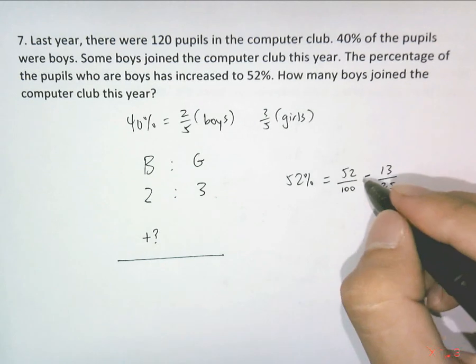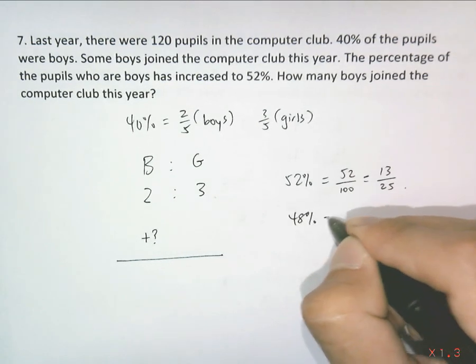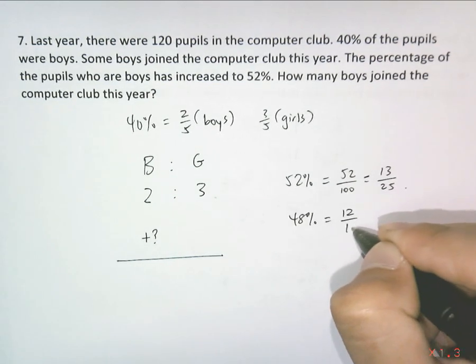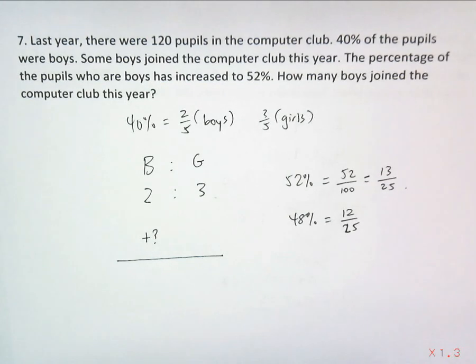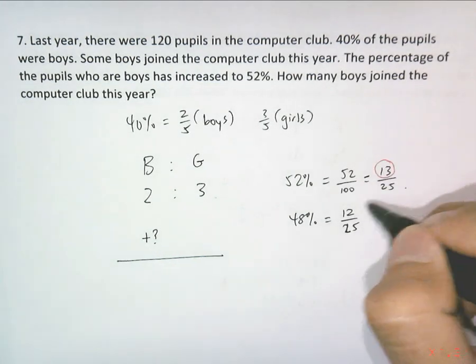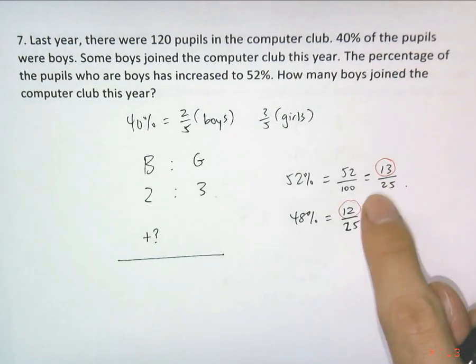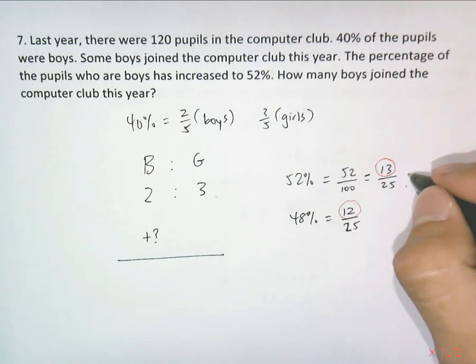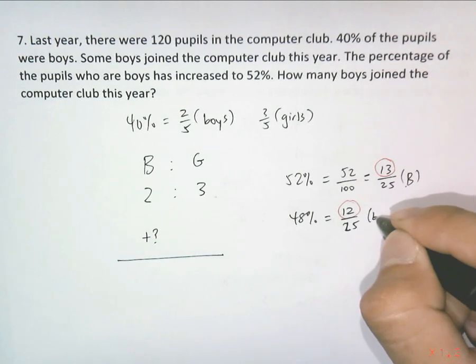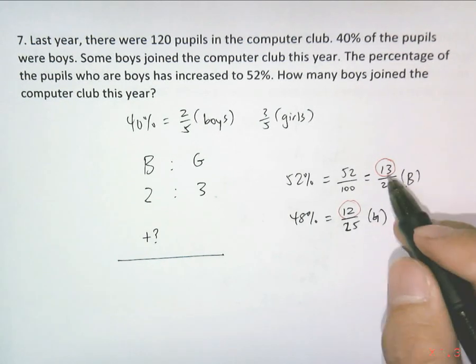The remaining 48%, which is 12 out of 25, must be the girls. Using the simplest ratio form, boys to girls is 13 to 12.